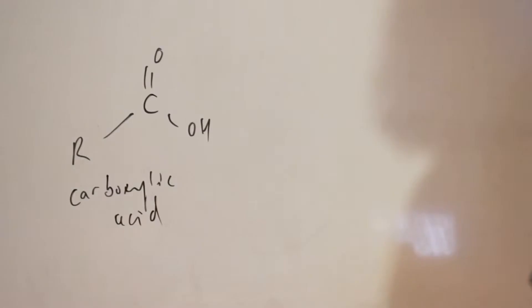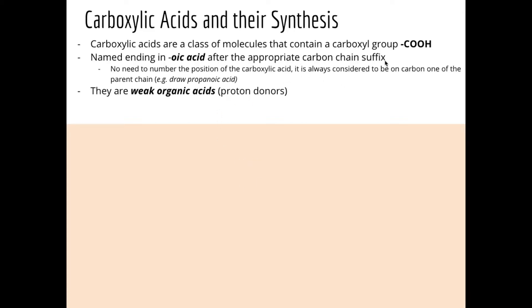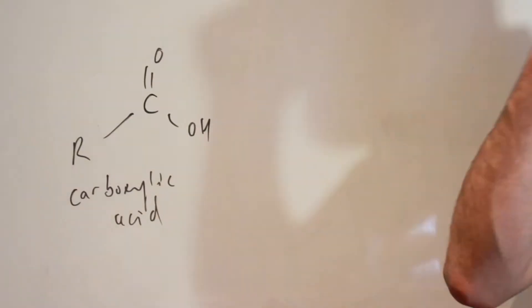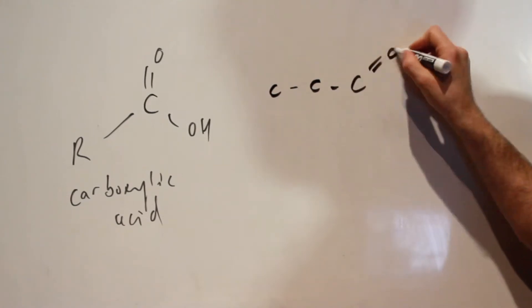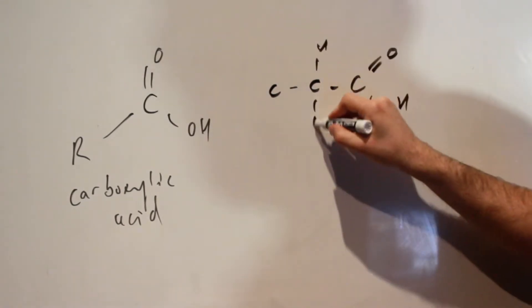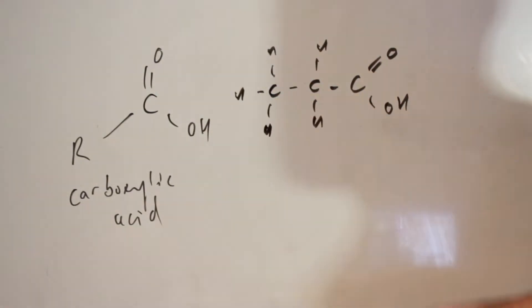When we are naming carboxylic acids, we don't have to number the carbon that they're on. They're always considered to be carbon number one of the chain, so we name the appropriate carbon suffix and then end it in 'oic acid'. For example, propanoic acid would have one, two, three carbons. You don't have to say 'one-propanoic acid' because by convention they're always on carbon number one — so just 'propanoic acid'.